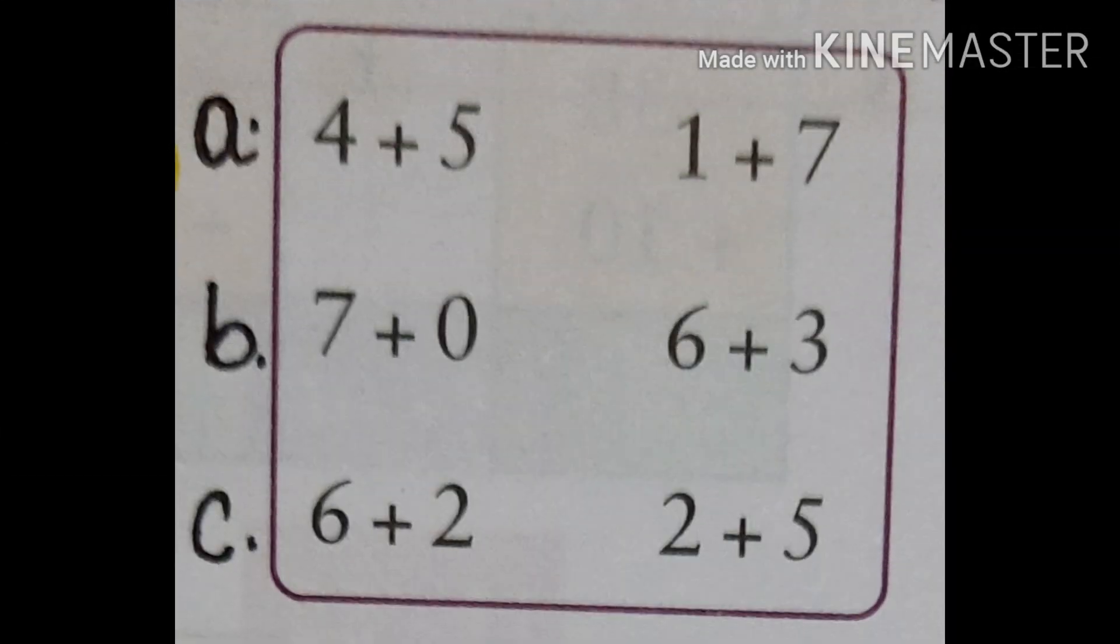Let us see the matching. See A, B, C. 4 plus 5, 7 plus 0, 6 plus 2.